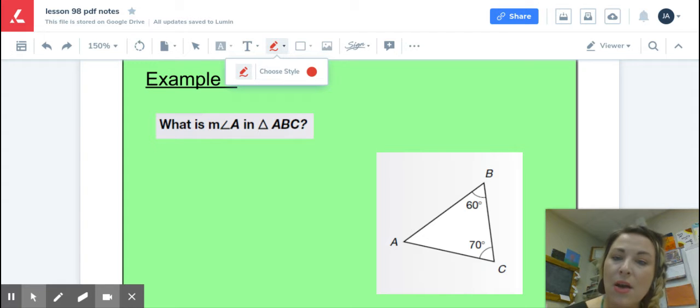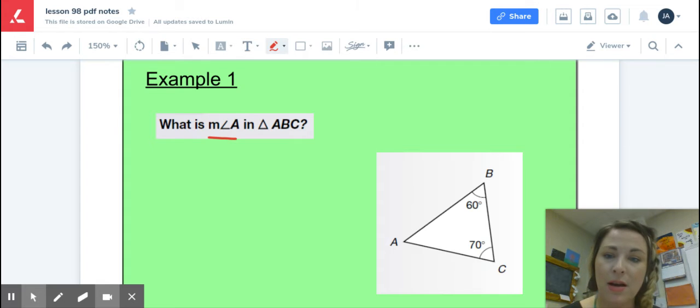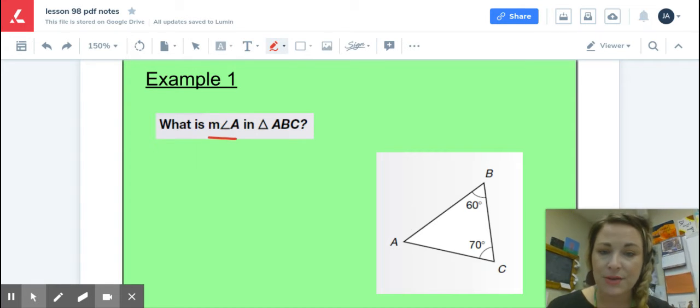The question is asking, what is, this right here, you read that as, what is the measure of angle A in triangle ABC? So go ahead and pause, give it a try, and then check back in once you have your answer.